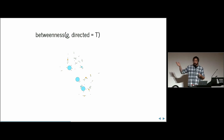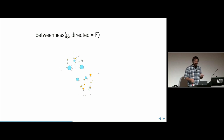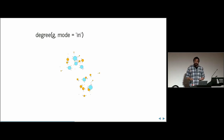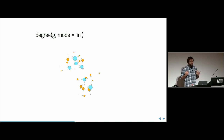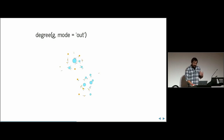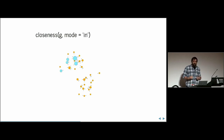Because direction matters, understanding whether your graph is directed or undirected makes a big difference. Here I've highlighted the blue nodes, which are the top five betweenness centrality nodes for a directed graph — things are completely different with an undirected measurement. There's also degree, which is simply the count of edges of a node. You can count inward-facing edges, outward-facing edges, or the total number of edges if you don't care about direction.